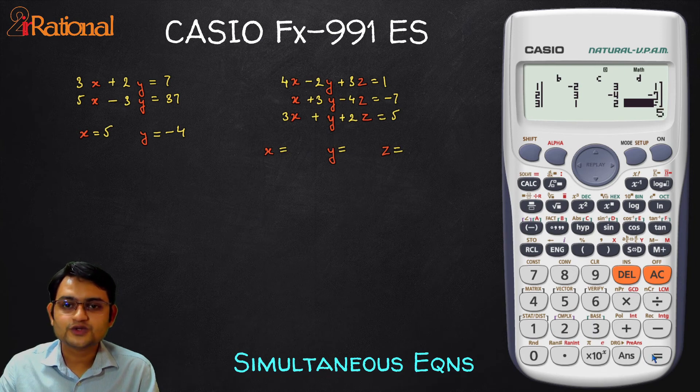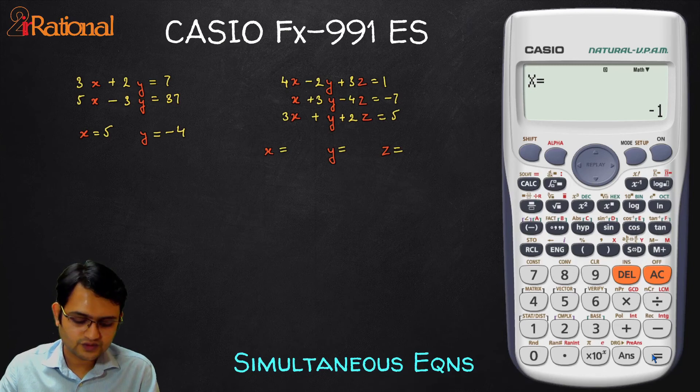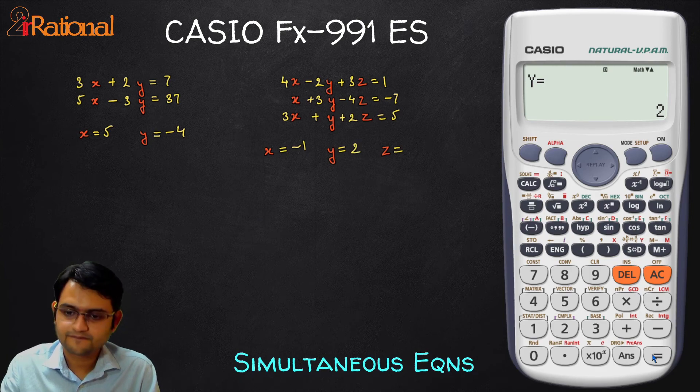After putting all our values all I have to do is press equal to and I get x equals minus 1, y equals 2, and z equals 3.